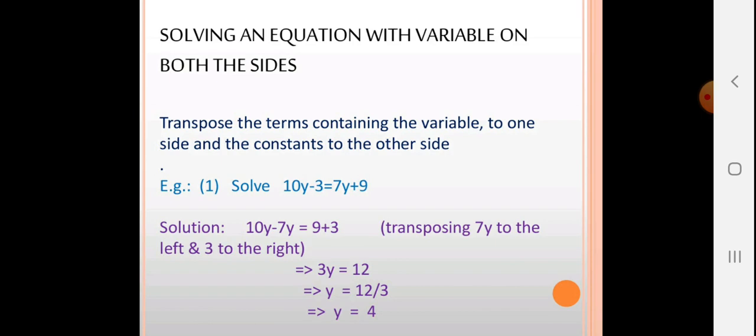Solving an equation with variables on both sides: always keep variables on the left-hand side and numbers on the right-hand side. Example: 10y − 3 = 7y + 9. Transpose 7y to the left and −3 to the right: 10y − 7y = 9 + 3, so 3y = 12, and y = 12 ÷ 3 = 4.